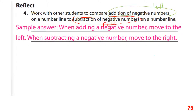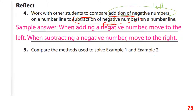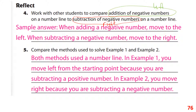To summarize: when adding a negative number, move to the left on the number line; when subtracting a negative number, move to the right. In example one we moved left because we subtracted a positive; in example two we moved right because we subtracted a negative.